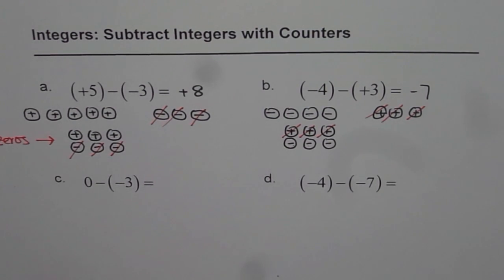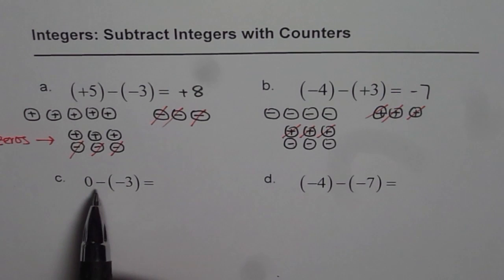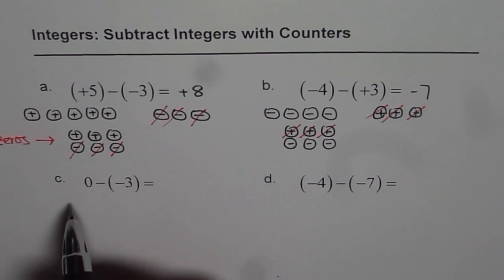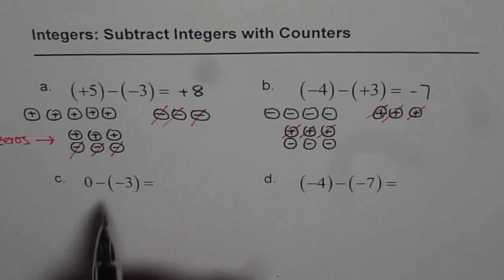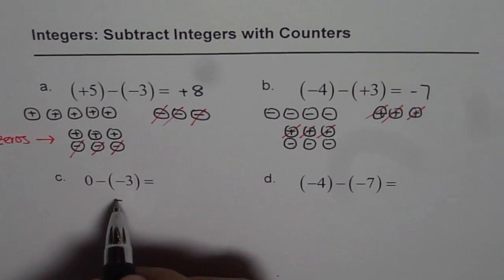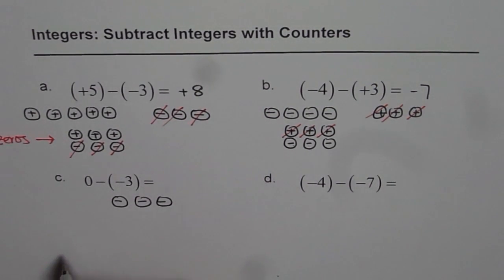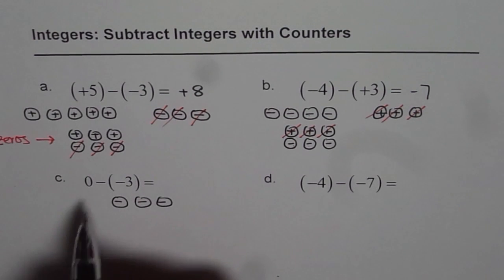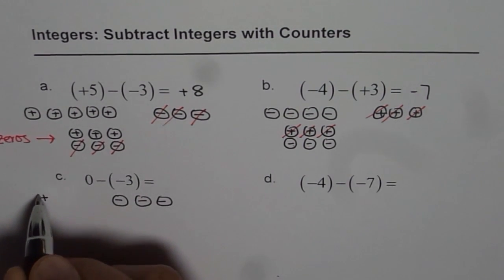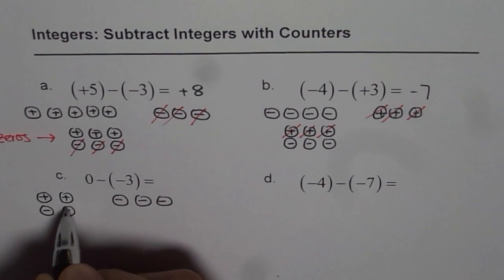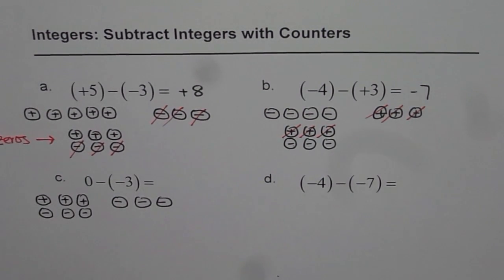Now let us do part C. We have to take away negative 3 from 0 — from nothing. So we do not have any counters here, but we have to take away negative 3. Let us make negative 3 counters. Since we have to take from 0, what we should do is add 3 zeros here. 3 zeros will be combination of plus and minus: plus, minus — 1st zero, 2nd zero, and the 3rd zero. From these 3 zeros, we can take away 3 negatives.